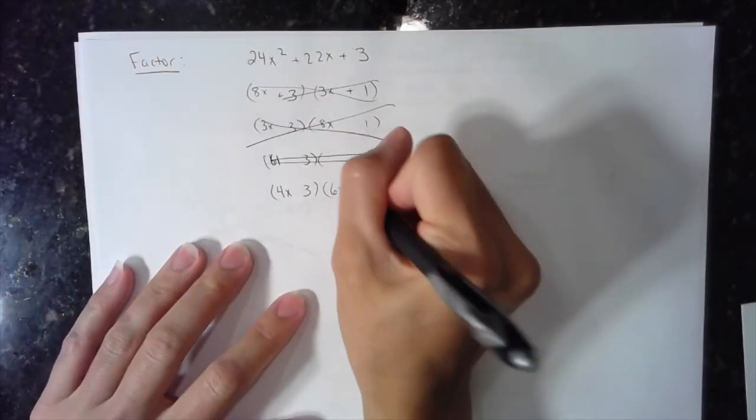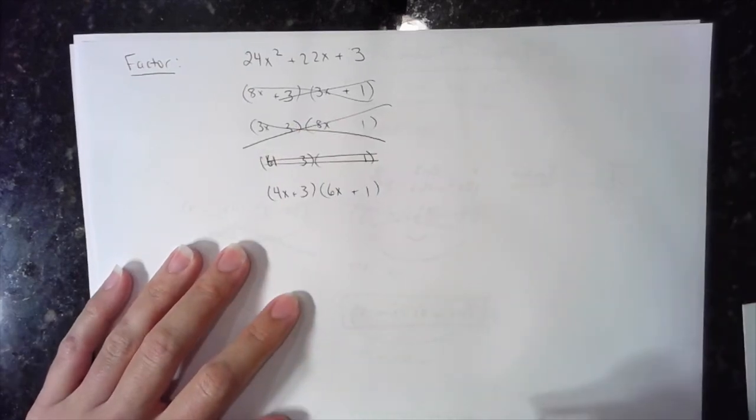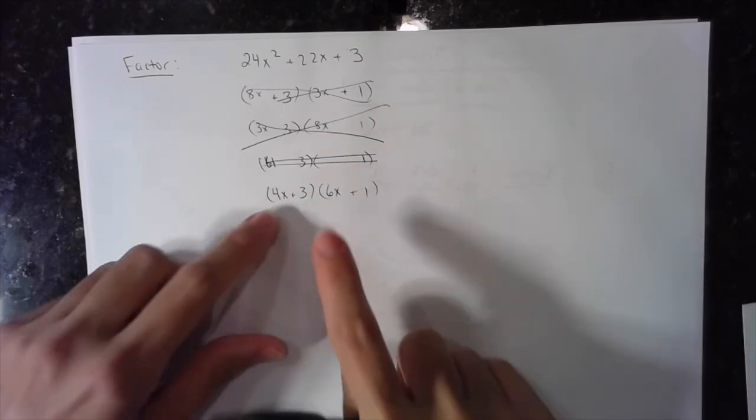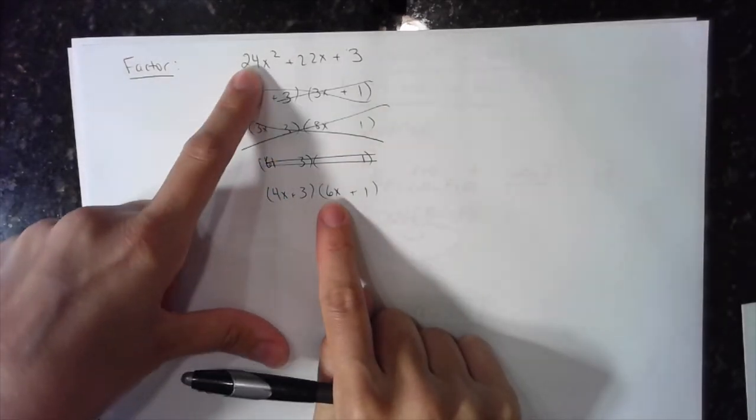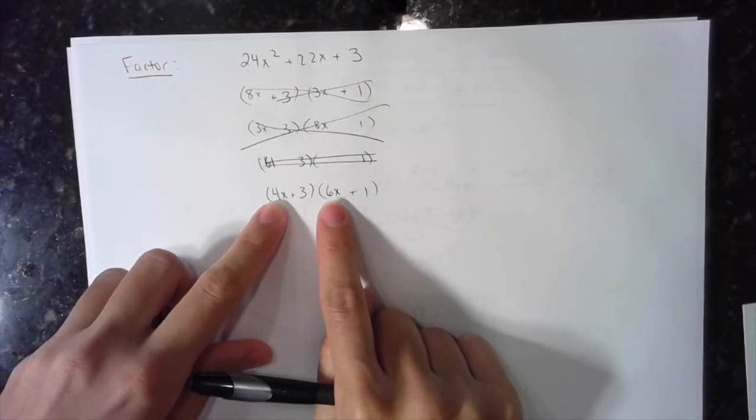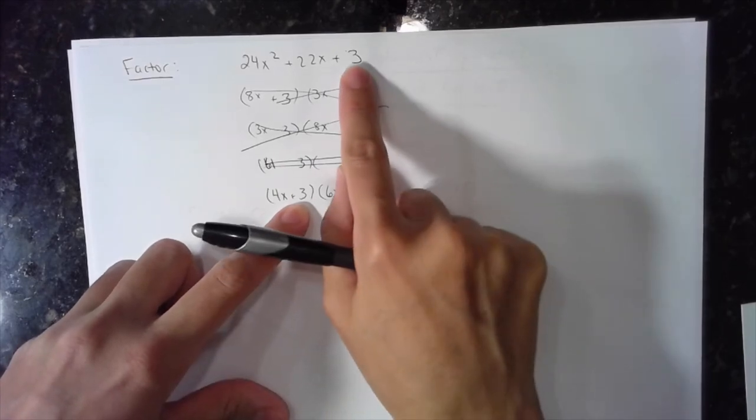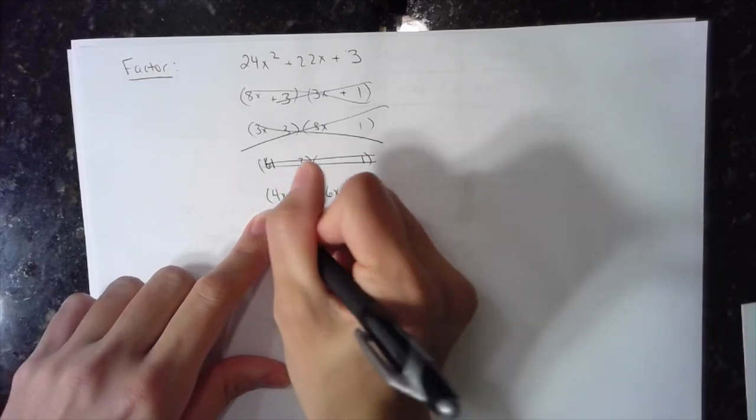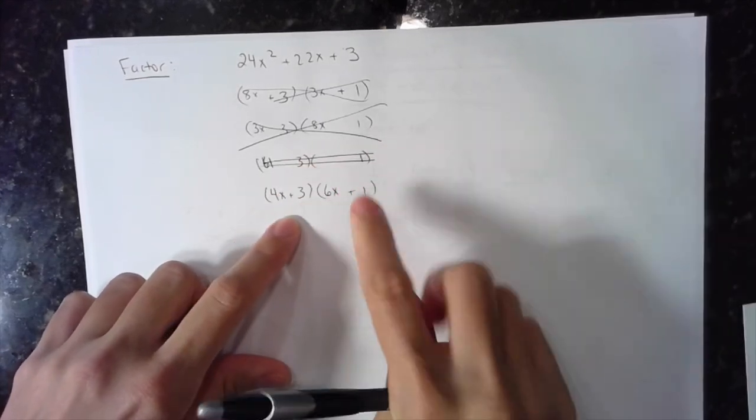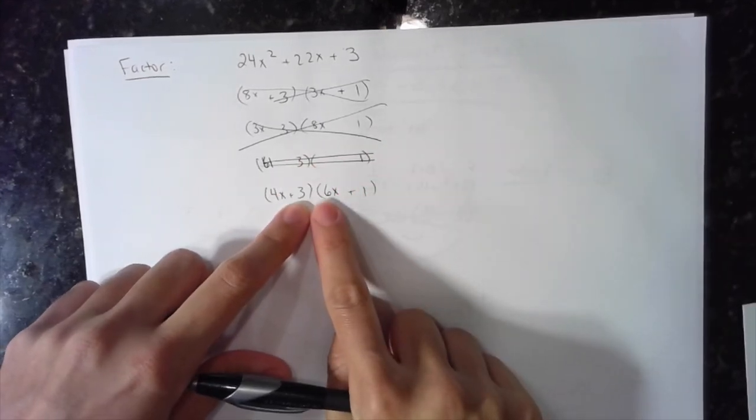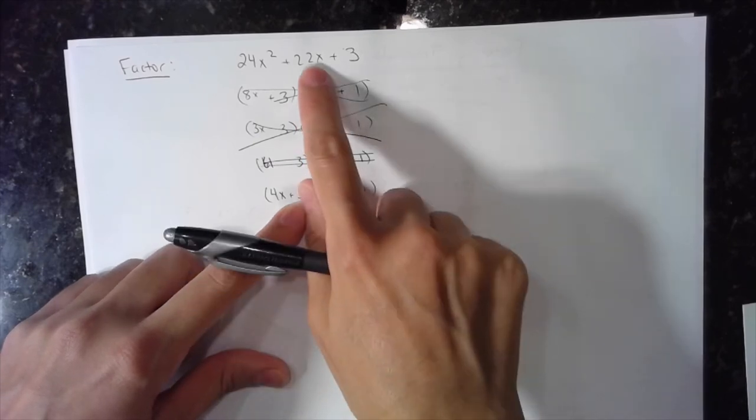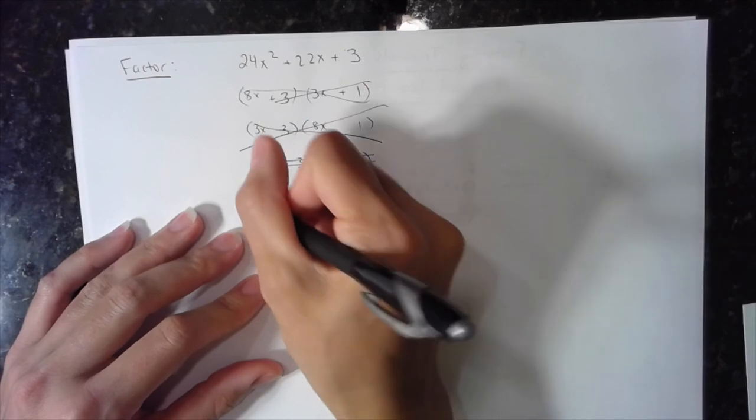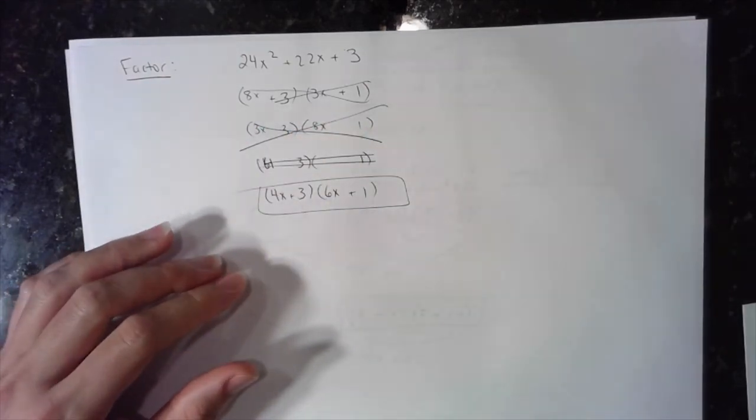Positive, positive means that both of these are going to be positive. I want to verify before I claim that I'm done. A 4x times a 6x is a 24x squared. That works. Positive 3 times positive 1 is positive 3. That works. Outer. And if you need to write it out, write it out. 4x. Inner. 18x. 4x and 18x. Positive and positive. Give me positive 22x. This guy's done. Okay? Keep practicing this.